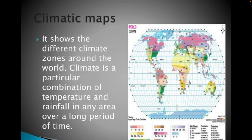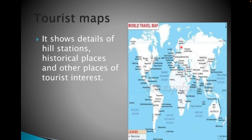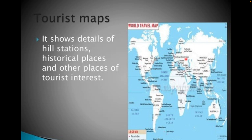In the present scenario, the climatic map is one of the most important among all these categories. Another one is the tourist map, which has become quite popular because tourism has increased immensely. We showcase a particular area, locating all historical and notable places. If you open the tourist map of India, you can easily locate famous tourist places as well as some hidden places. I suggest you all try this — open it on your mobile phone and type 'tourist map of India.'